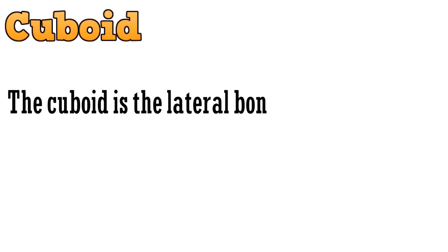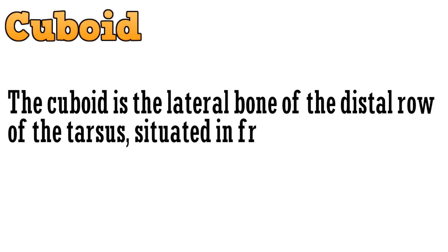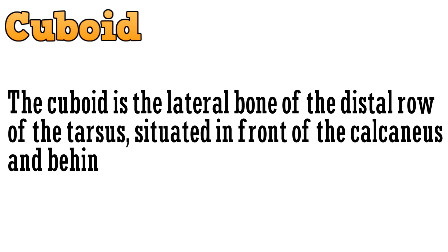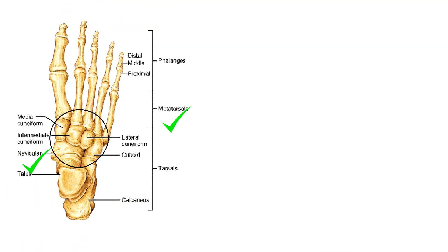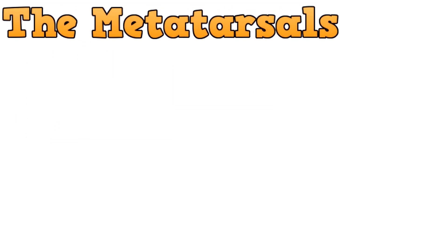The last tarsal bone is the cuboid. The cuboid is the lateral bone of the distal row of the tarsus, situated in front of the calcaneus and behind the fourth and fifth metatarsal bones. This bone is the cuboid, situated laterally to the lateral cuneiform. With this we complete the tarsal bones and move to the next part — the metatarsals.